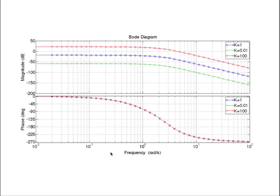Here I have plotted the magnitude and phase plot for three values of k. k equal to 1 is the original plot, k equal to 0.01 is the green curve, and k equal to 100 is the red curve. Notice that the phase plot is the same for all three values of k.